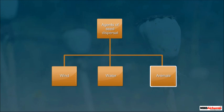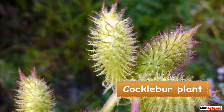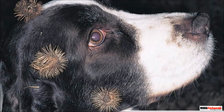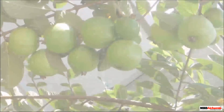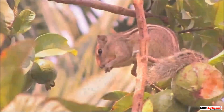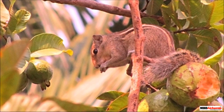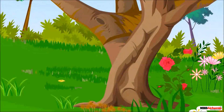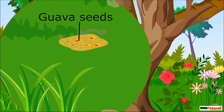Lastly, let us see how animals act as an agent for seed dispersal. Seeds of some plants such as that of cocklebur are surrounded by hooks or spikes which stick to the body of furry animals and are carried away. Some plants like guava have fruits with very hard seeds. These fruits are eaten by birds and animals like squirrels. The seeds are not digested and are passed out through their droppings at places distant from the parent plant. Thus, these seeds get dispersed.